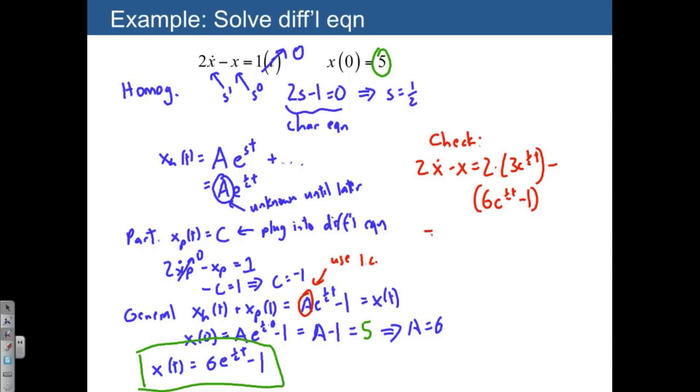You end up with, the 6's are going to cancel out, 6 minus 6 e to the 1 half t. I'm just collecting the 1 half t terms, plus our, there's a 1 constant term left here, which is minus minus 1, which leaves us with a plus 1. So if you put this all together, you end up with 2x dot minus x is equal to 0 plus 1, which gives us 1.